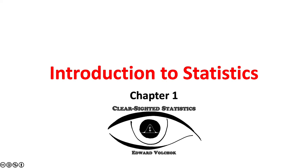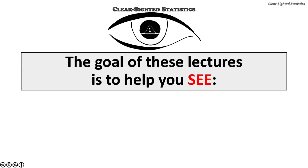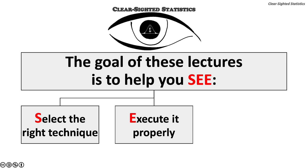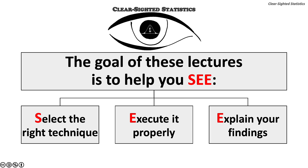This lecture covers the first chapter of Clearsighted Statistics: Introduction to Statistics. The goal of all lectures from Clearsighted Statistics is to help you SEE — an acronym that stands for: select the right statistical technique, execute that technique properly, and explain your findings clearly and succinctly.